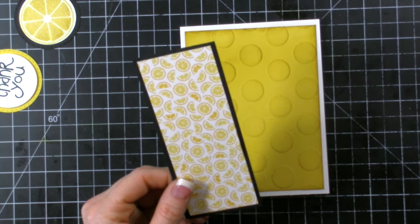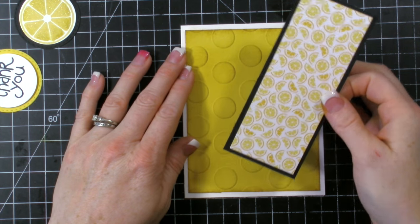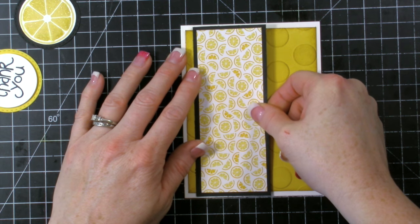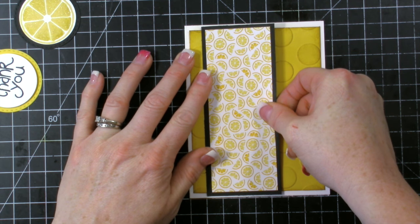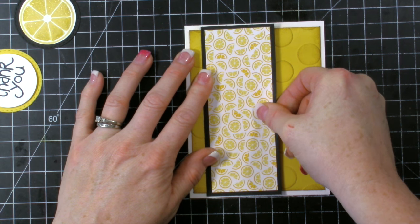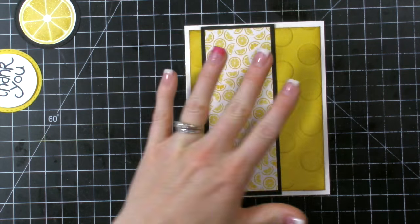And we're going to do it right over here on the edge. Let me zoom out a little bit so you guys can see. So we'll do this right on the edge. I'll use my grid mat to line everything up so it will go on there straight. Just like that.